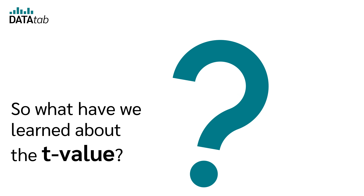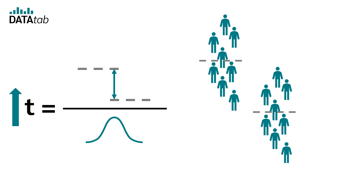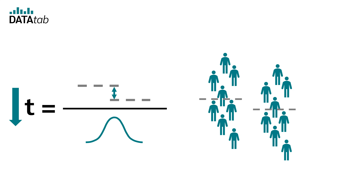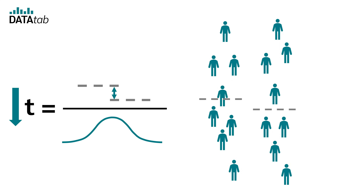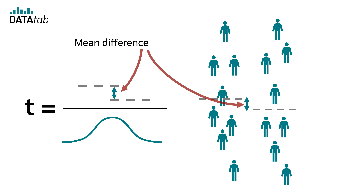No matter which t-test we calculate, the t-value will be greater if we have a greater difference between the means, and smaller if the difference is smaller. The t-value also becomes smaller when we have a larger dispersion of the mean — the more scattered the data, the less meaningful a given mean difference is.